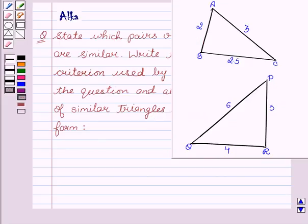Now, here we are given two triangles ABC and PQR with the sides AB equals 2, AC equals 3, BC equals 2.5, PR equals 5, QR equals 4, and PQ equals 6.